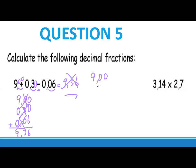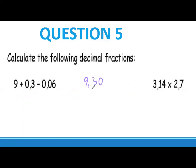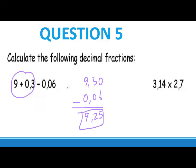Correcting question five: we have 9.00 plus 0.30 equals 9.30. Then 9.30 plus 0.06 — but wait, one operation is minus. So we do 9.30 minus 0.06, giving us 9.25. Just be careful: if you have plus and plus, you add; but if you have plus and minus, you must be careful about the sign. This question we will carry on with next lesson.